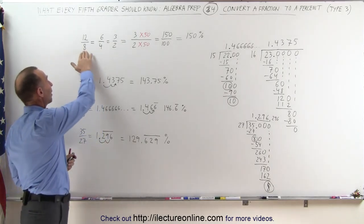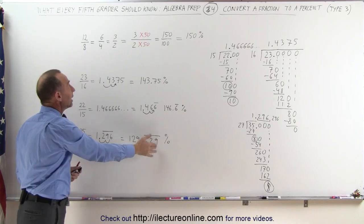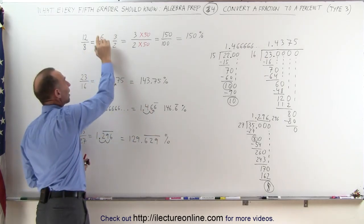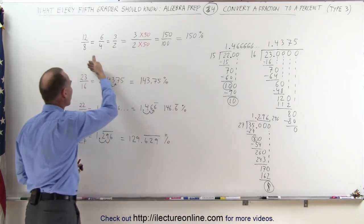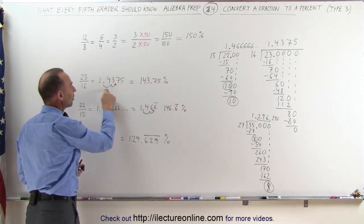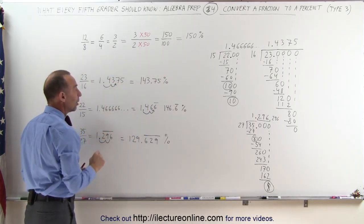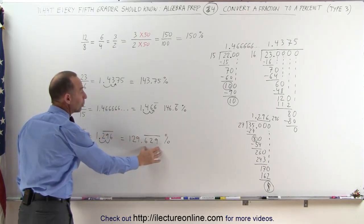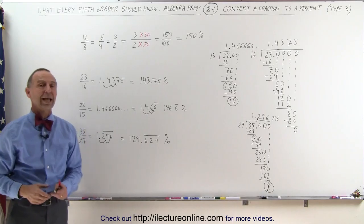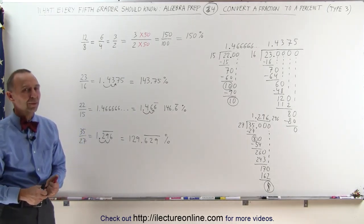And that's how we convert fractions to decimals, either by reducing the fraction to a point where I can make the denominator into 100, or by simply doing longhand division and then moving the decimal place over two spots. Notice in some cases you have repeating numbers, so you have to take that into account when you write the number as a percent. And that's how it's done.